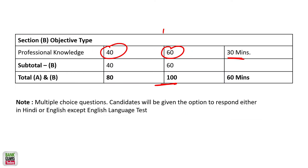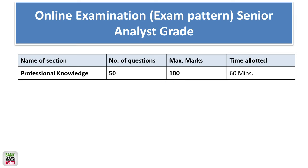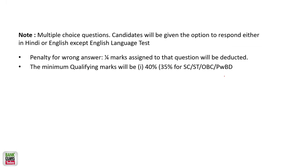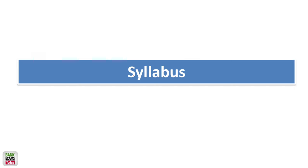You need to score 40% in each section and 50% overall for the general category. For the senior analyst grade, there is only a professional knowledge paper: 50 questions, 100 marks, and 60 minutes allotted. The qualifying mark is again 40%, and negative marking applies.